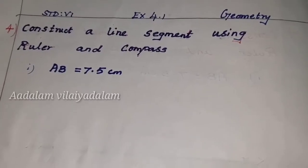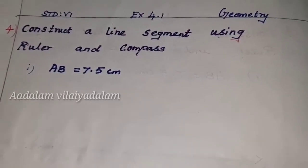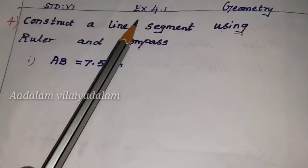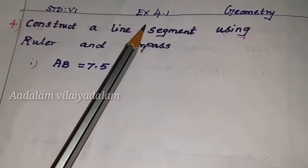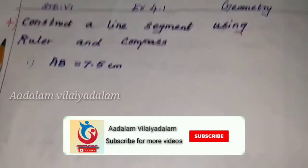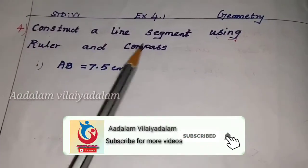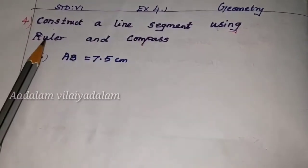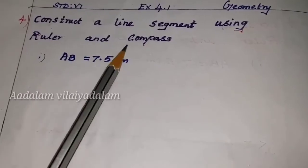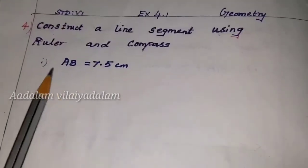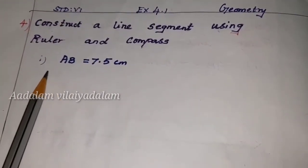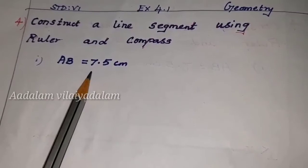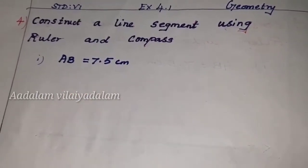Hello students, today we shall learn exercise 4.1, 4th question: construct a line segment using ruler and compass. The first one: AB equal to 7.5 cm.